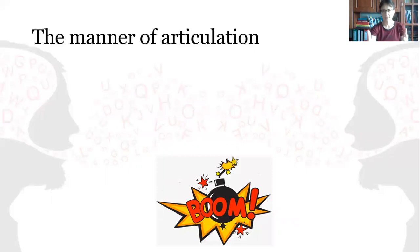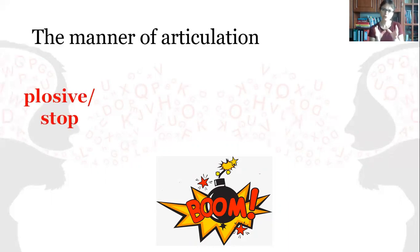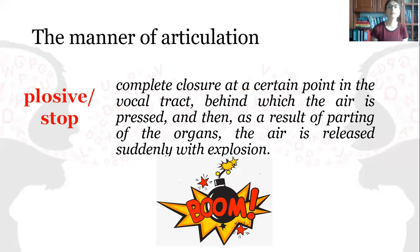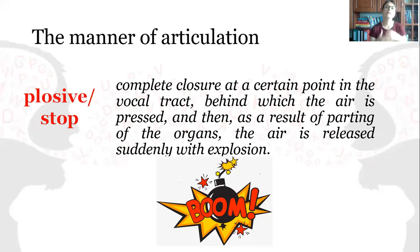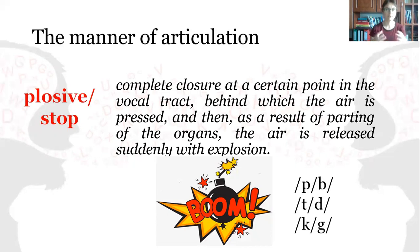This picture is meant to represent the plosives in English, also called stops. There is a complete closure in the vocal tract. The air behind this brief obstruction is pressed, and then, as a result of the parting of the organs, the air is released suddenly with a kind of explosion. Think about P — you can feel how the air is pressed and then suddenly released.